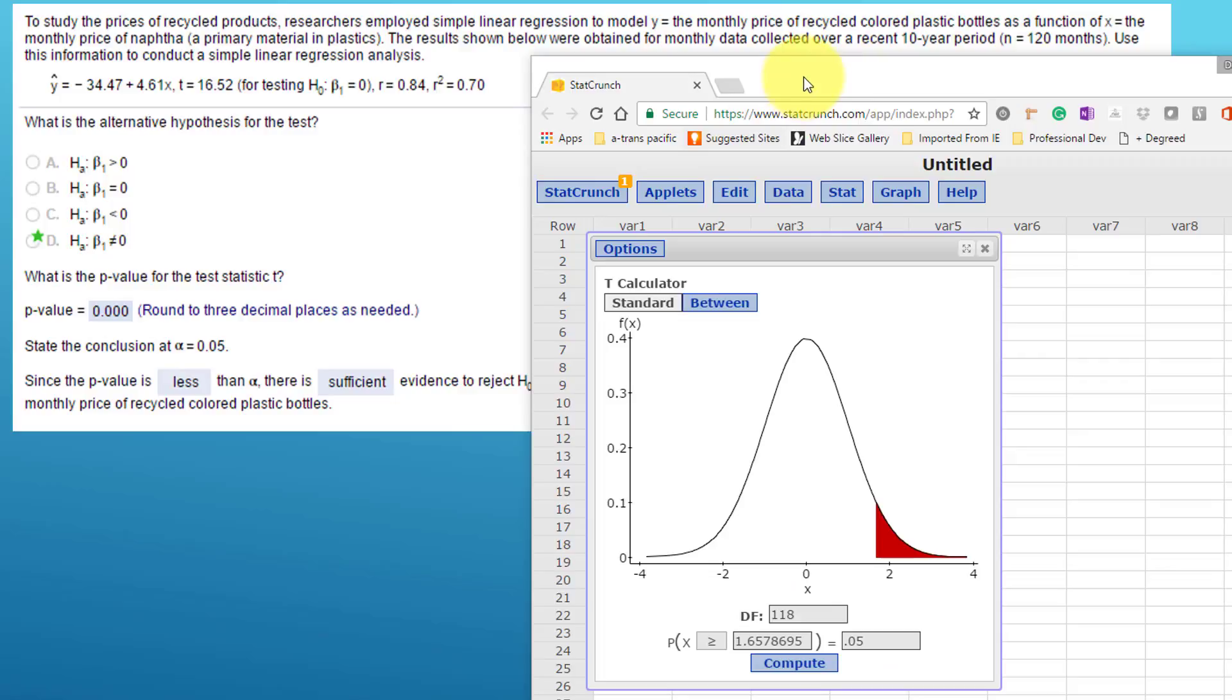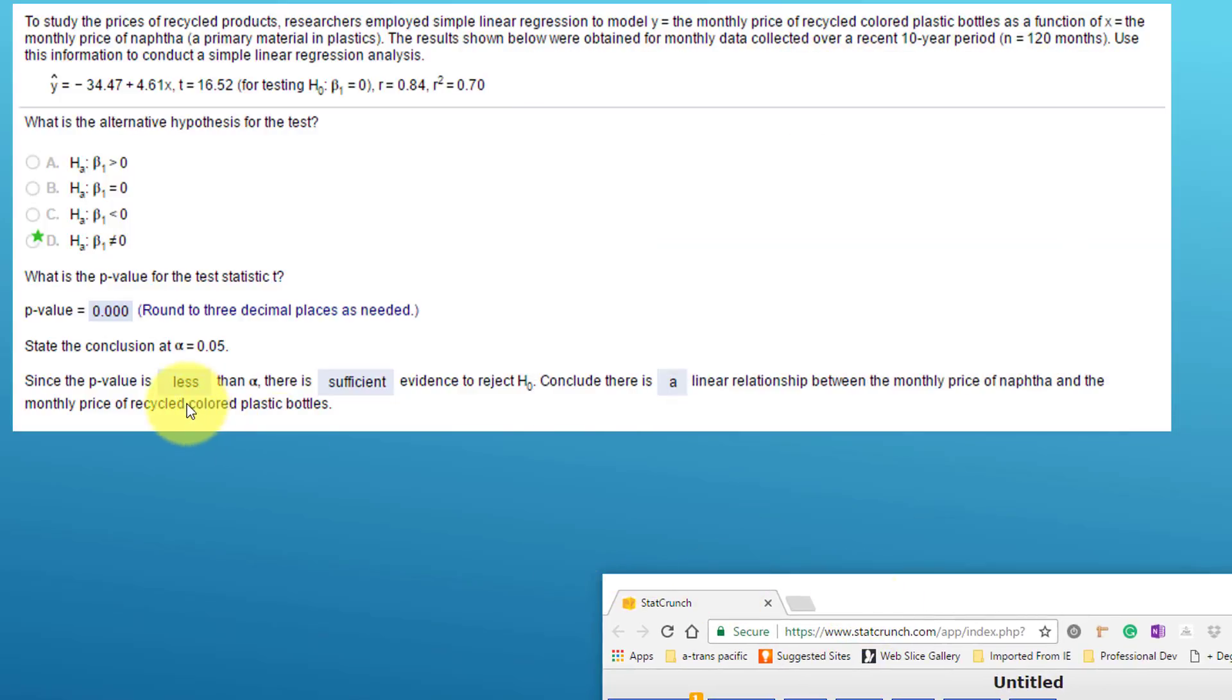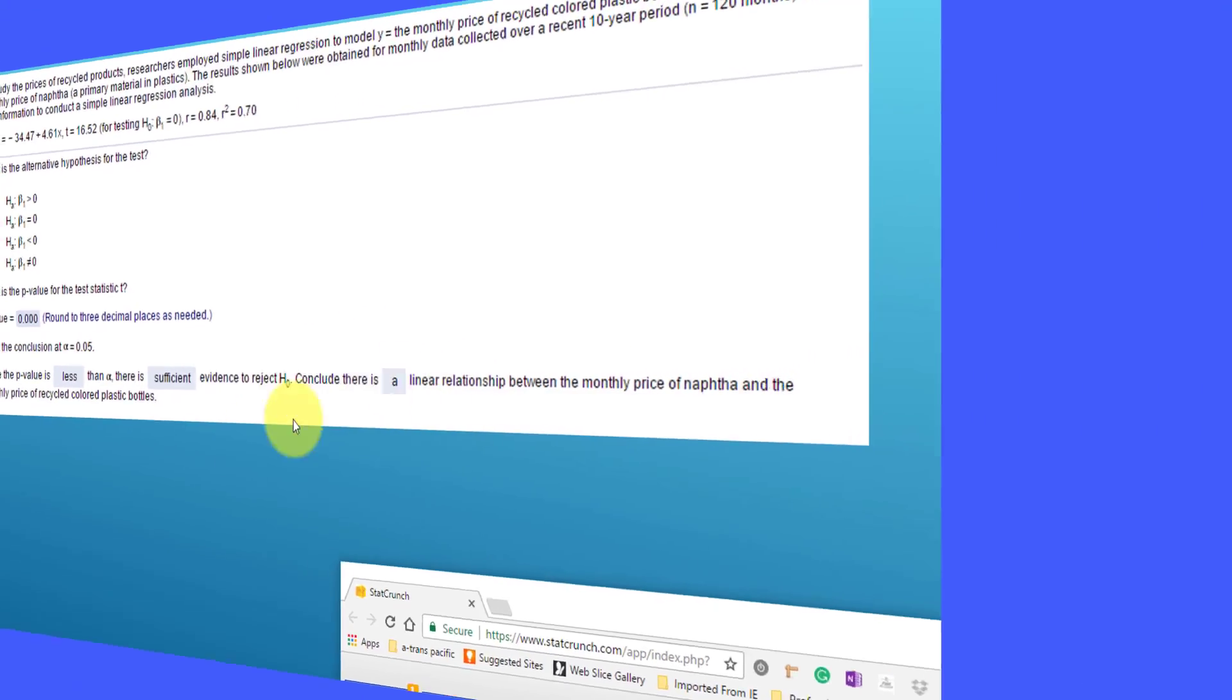And the conclusion of course is that p-value is less than alpha, therefore we reject the null and conclude there is a linear relationship between the monthly price of naphtha and the monthly price of recycled colored plastic bottles. There is a relationship. There is a slope.